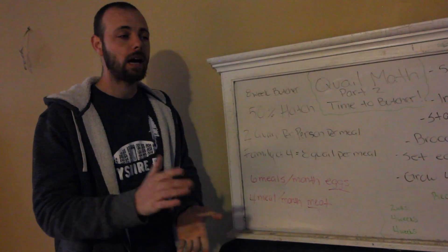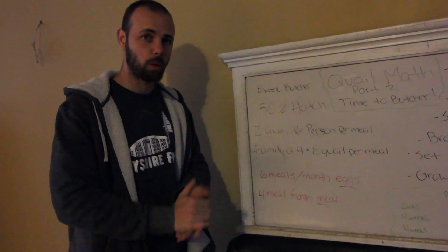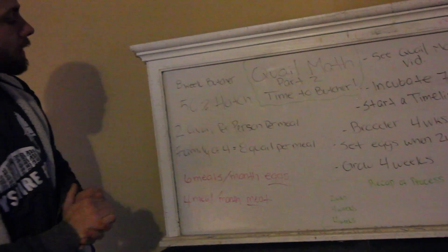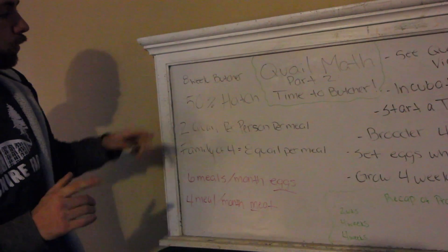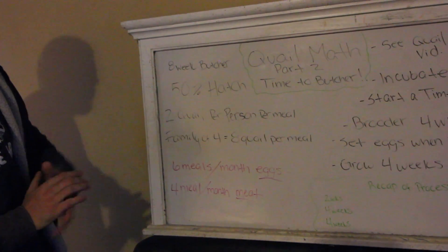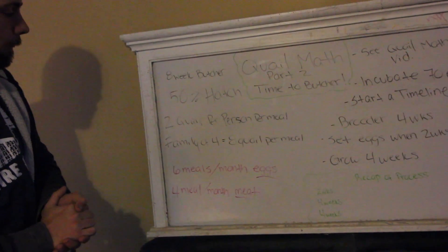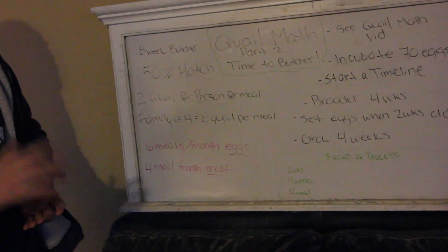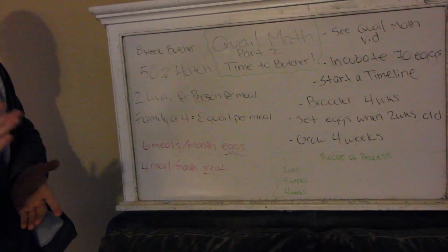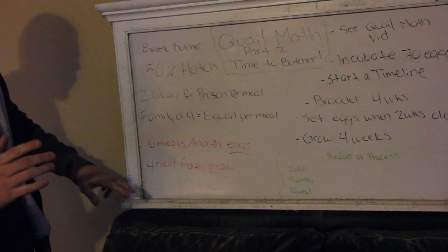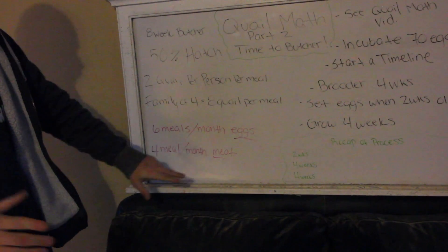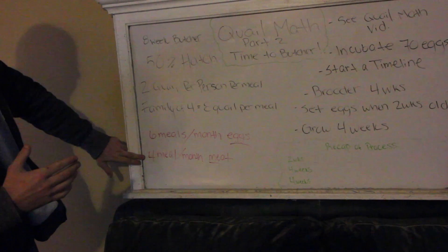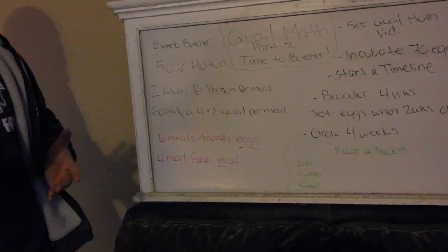Those are the numbers we're basing this off of, so if you haven't seen that video, make sure you watch it. Going into it, we're going to assume we butcher at 8 weeks, assume a 50% hatch rate, and assume 2 quail per person per meal. For a family of 4, that means 8 quail per meal, or 32 quail a month — and that's the number you want to remember. We're looking to get 32 quail a month so you can have one meat meal a week, plus 6 meals a month on eggs, from that 50-count box.